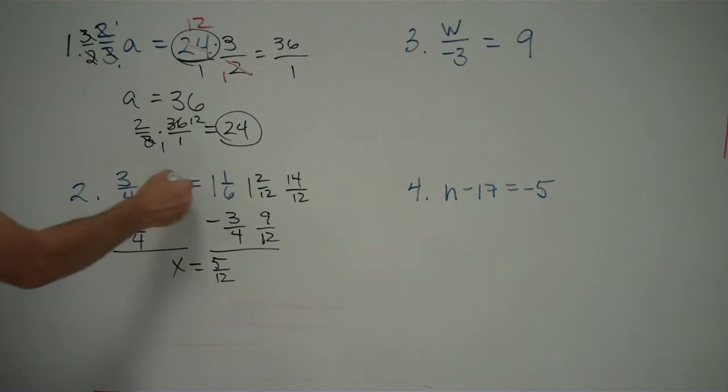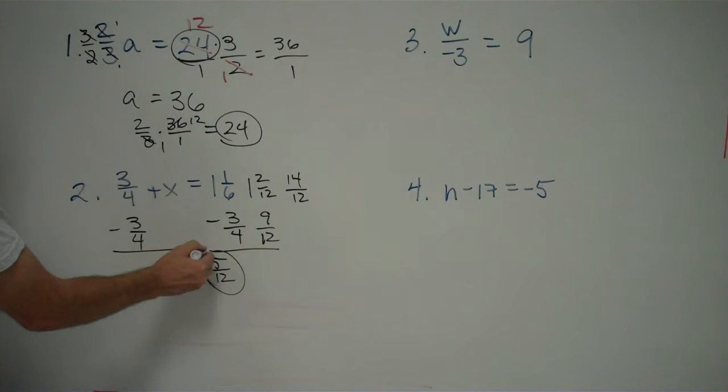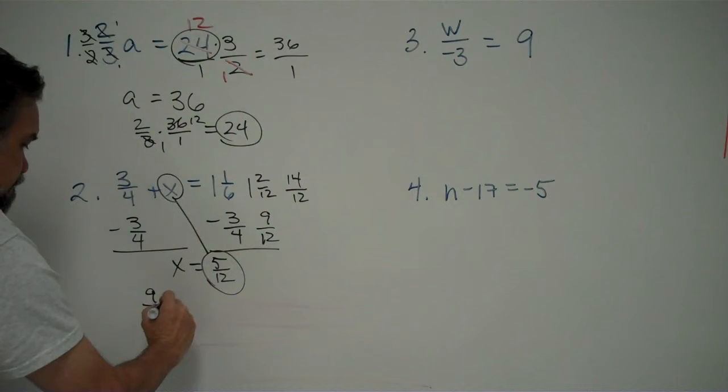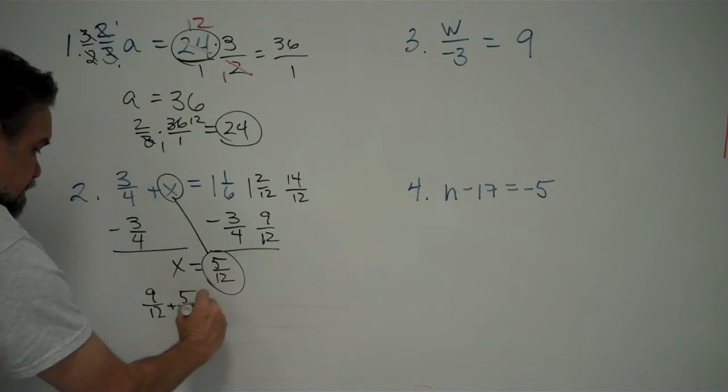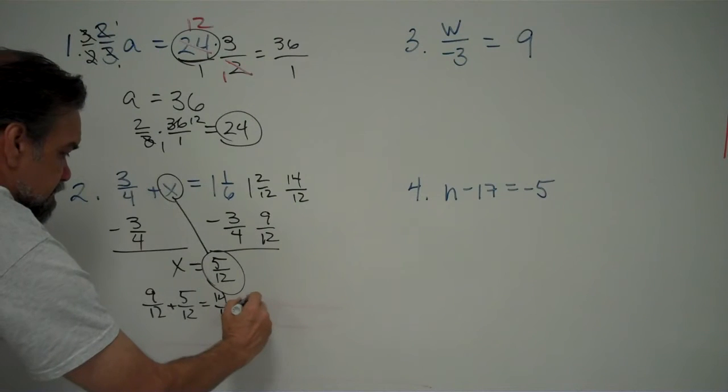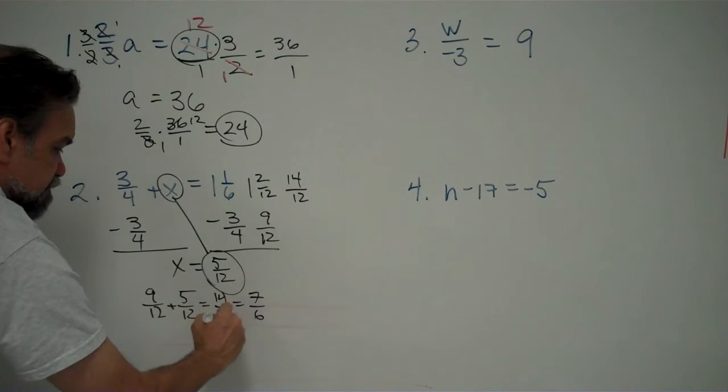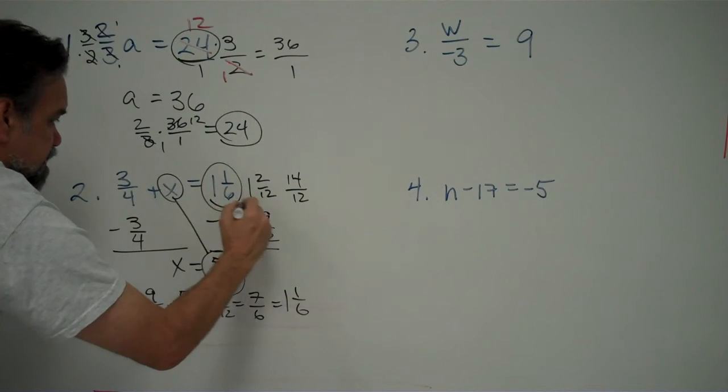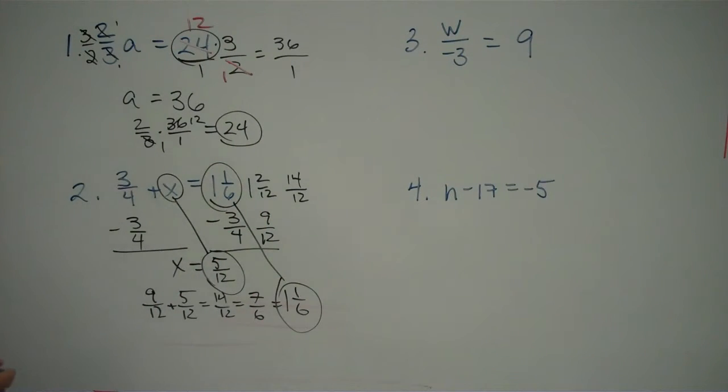Again, let's stick this answer, let's replace x with this answer here, and see if this works. 3 fourths, like I said, I can call that 9 twelfths plus 5 twelfths equals 14 twelfths, which is 7 over 6, when I simplify the fraction, which is 1 and 1 sixth, and that's exactly what I wanted. So, yes, that works.